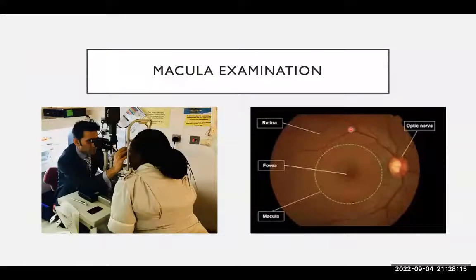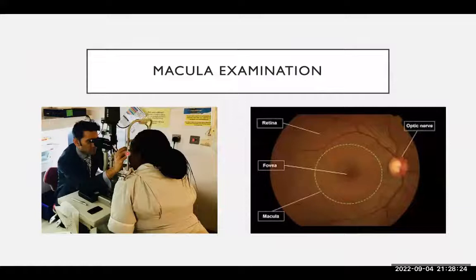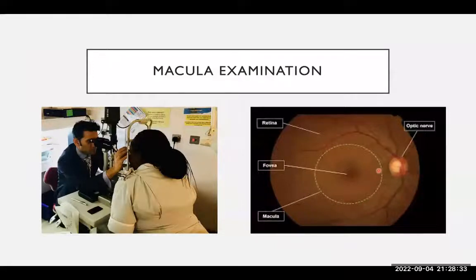How do we examine the macula? We use a slit lamp in clinics — this microscope here — and we use a variety of lenses to look inside the patient's eye. When we look inside, we see the optic nerve and the macula, with the fovea right in the middle.